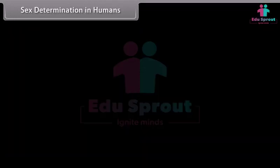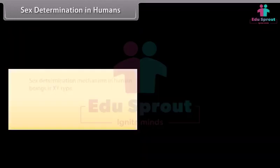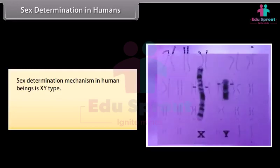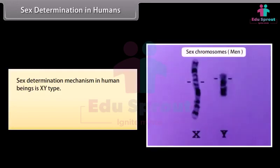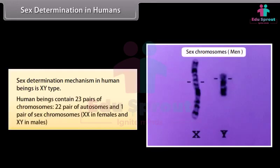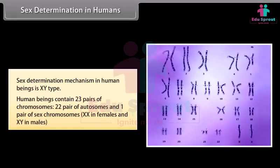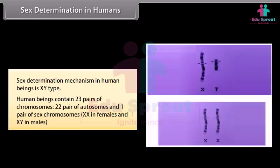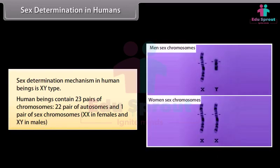Sex determination in humans follows the XY type mechanism. Human beings contain 23 pairs of chromosomes: 22 pairs of autosomes and one pair of sex chromosomes — XX in females and XY in males.